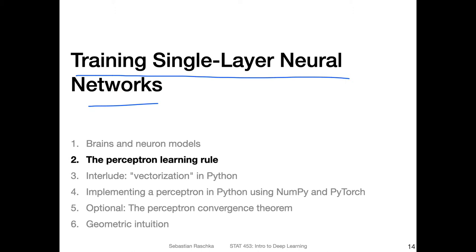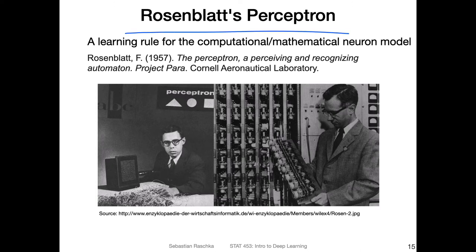Let's now finally talk about training single layer neural networks, and in particular the perceptron learning rule. That goes back to the Rosenblatt perceptron that we briefly mentioned in the history of deep learning lecture.